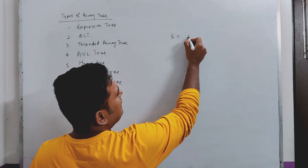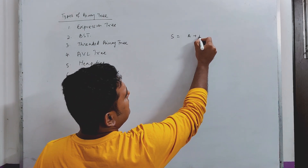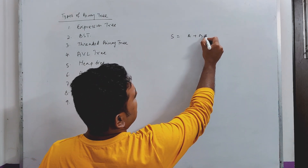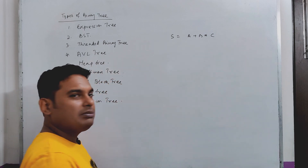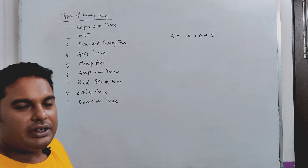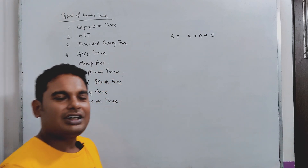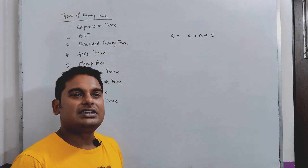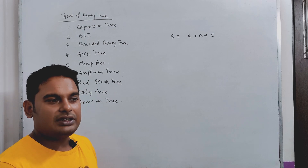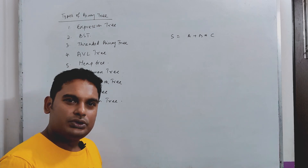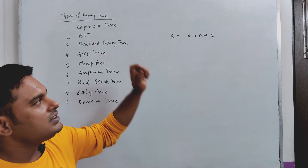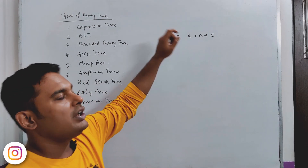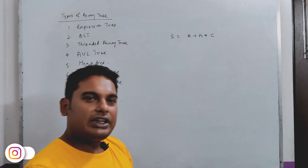Suppose we have a plus b equals c. So this is an expression. When we have multiple operands and operators, this is an expression. The computer evaluates based on the major operator.